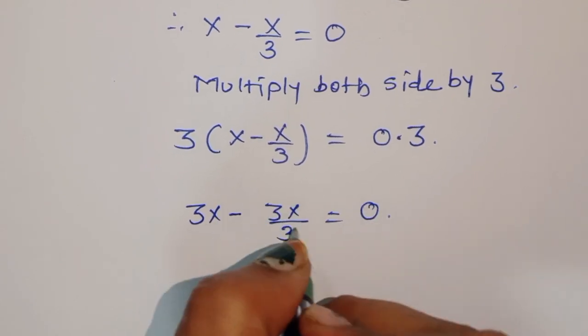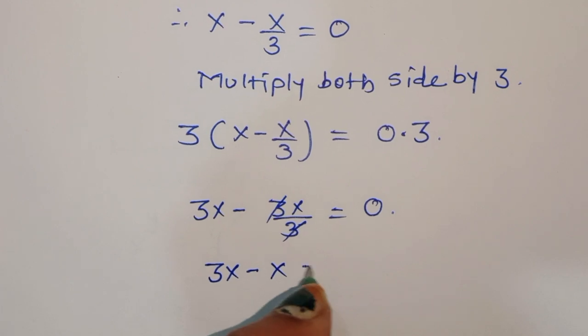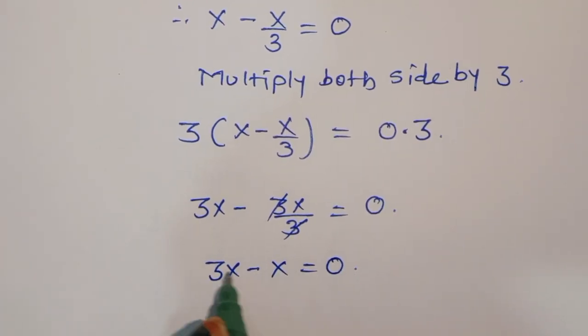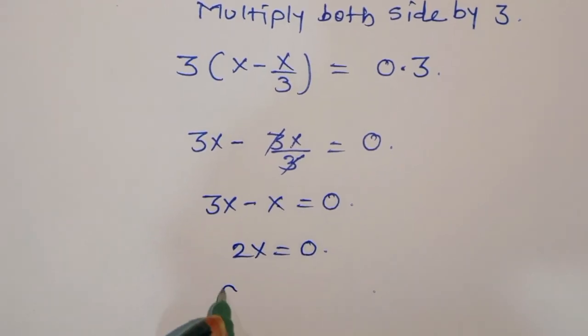Now we can cancel. 3x minus x is equal to 0. So 2x is equal to 0. Dividing both sides by 2.